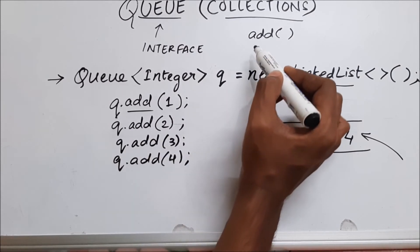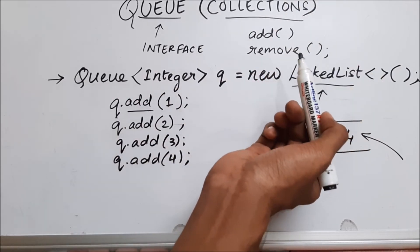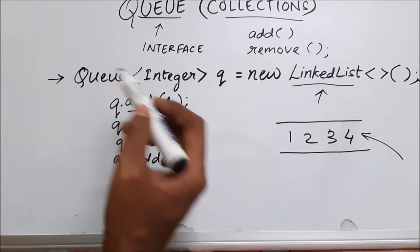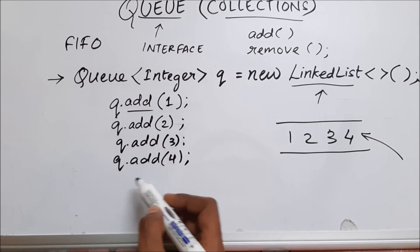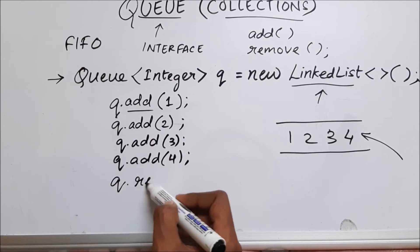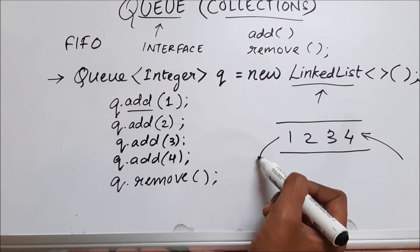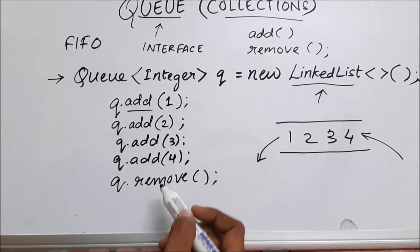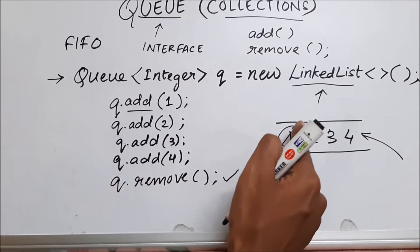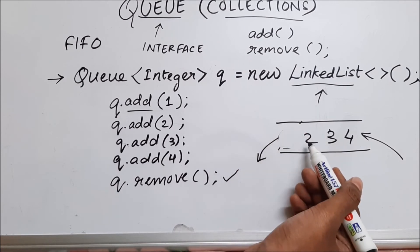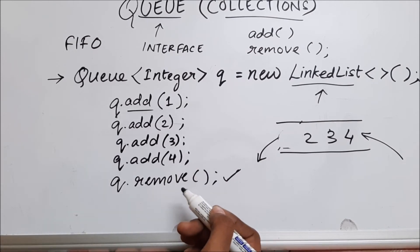Now let's talk about the remove function. If I use queue.remove(), what will happen? As discussed, queue is FIFO — first in first out — so the value present at the start of the queue will get deleted. So after calling queue.remove(), our queue is left with the values two, three, and four. This is how the remove function works.